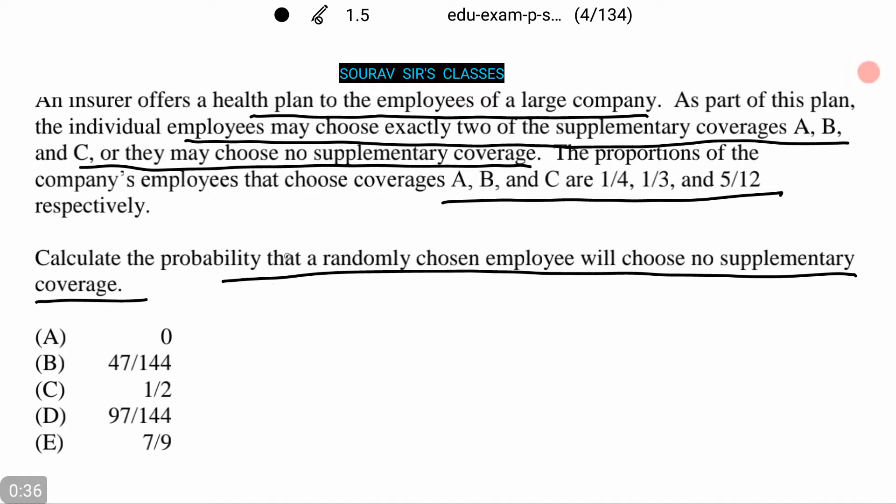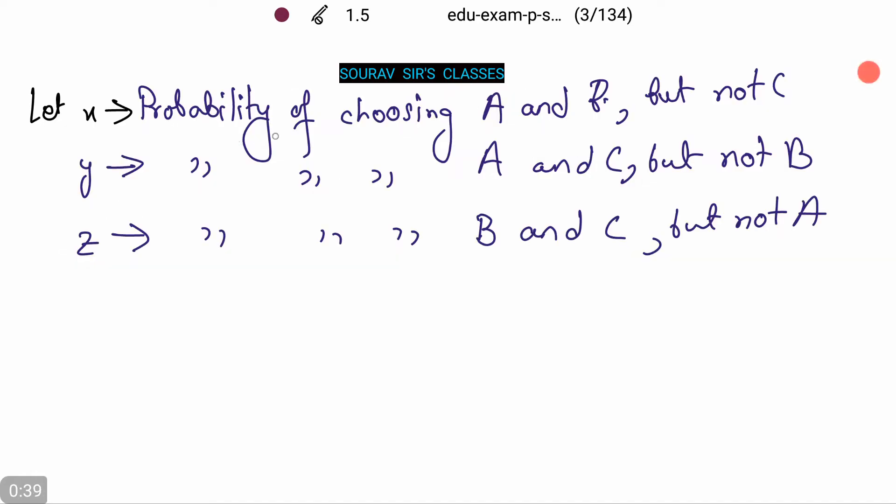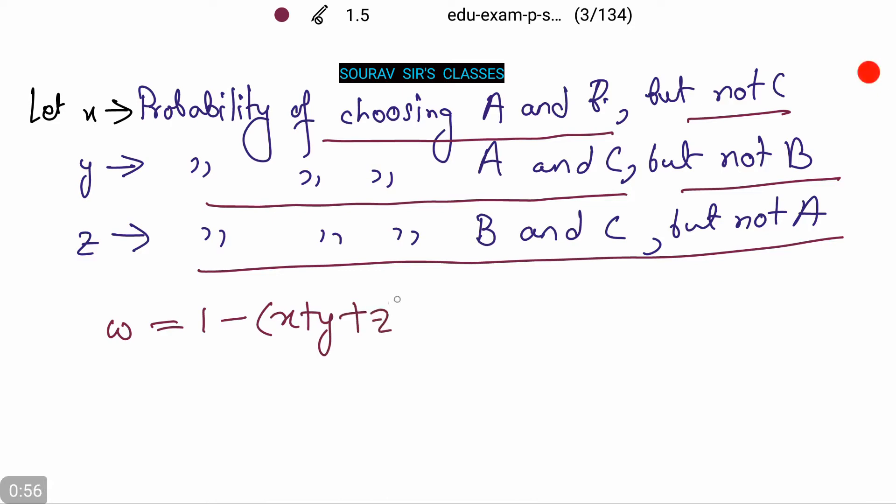These are the following options. Let us see how to do this. Let X be the probability of choosing A and B but not C, Y be the probability of choosing A and C but not B, and the probability of B and C but not A equals to Z. Now we want to find W such that W equals 1 minus X plus Y plus Z.